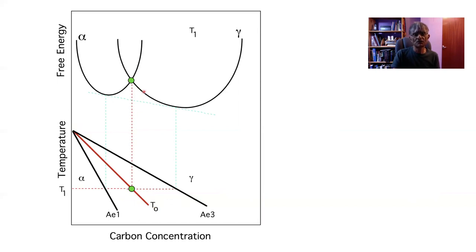If I have austenite the composition of which lies to the right of the T0 curve, then when it transforms without a composition change into ferrite we will get an increase in free energy and a spontaneous reaction cannot occur. When the carbon concentration is less than T0, I can get a transformation without a composition change and a reduction in free energy. It is impossible to get diffusionless transformation if the composition of the austenite falls to the right of that T0 curve.